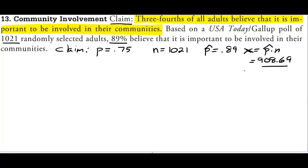No. We always have to round x to a whole number. So x equals 909 because you can't have 0.69 of a person.